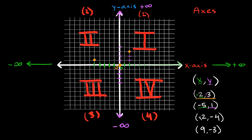Next we have the point negative two comma negative four. This means we move negative two spaces in the x direction and then negative four spaces in the y direction. So we go negative one, negative two in the x direction, then negative four spaces in the y direction — meaning we go down: negative one, negative two, negative three, negative four. That spot is the point negative two comma negative four.